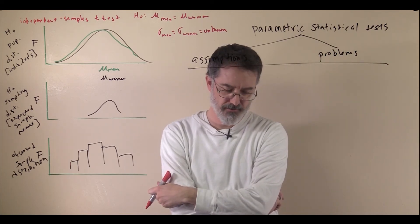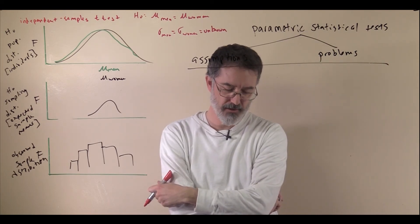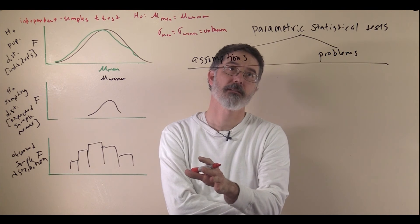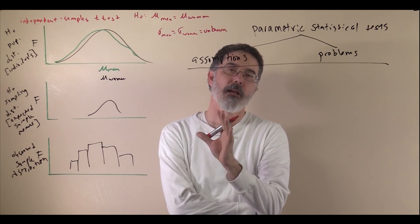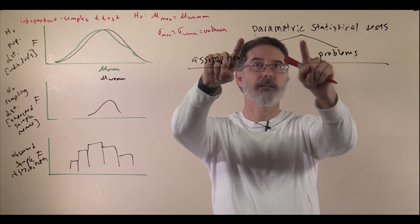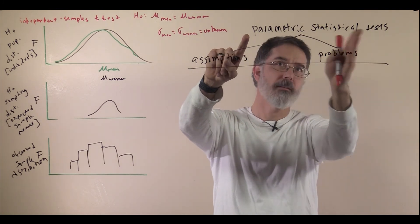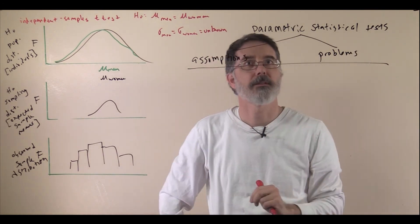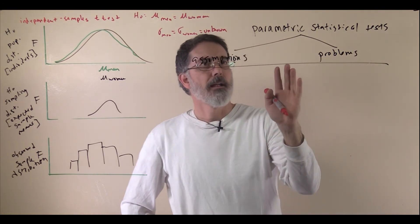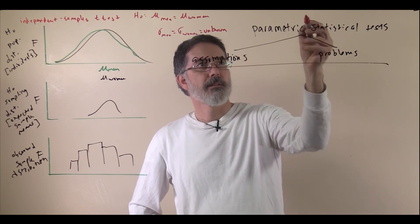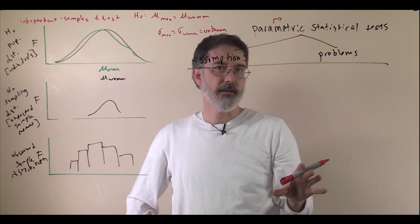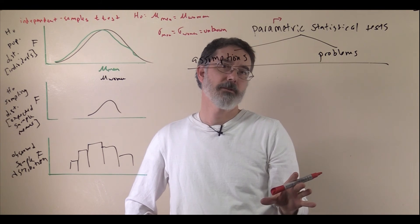So far in this class, we have talked about a bunch of different inferential statistical tests, and all of them have been a type of statistical test called parametric. They have all been parametric statistical tests. Parametric statistical tests assume various things about the population.